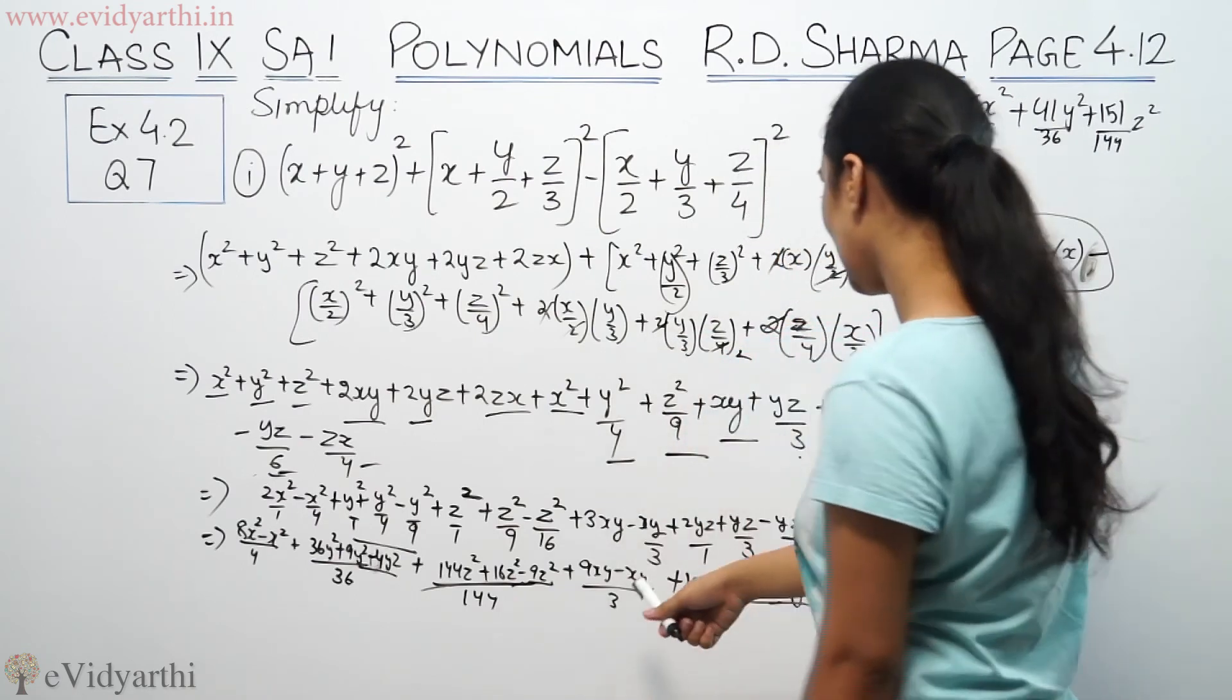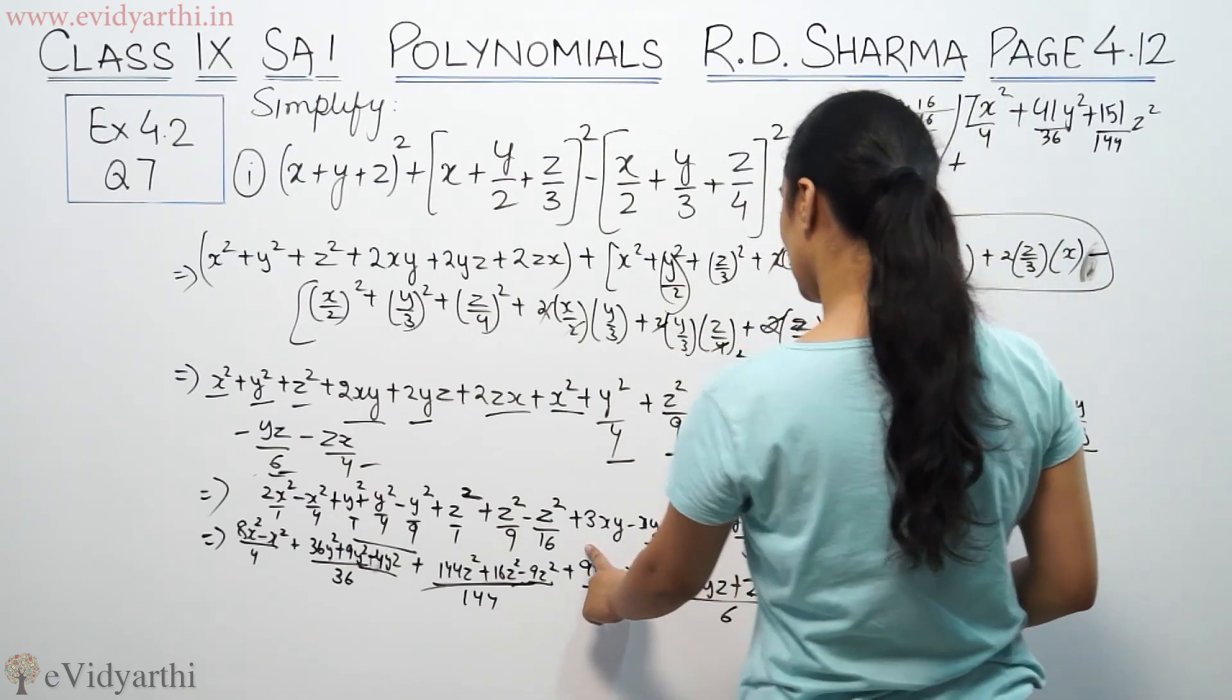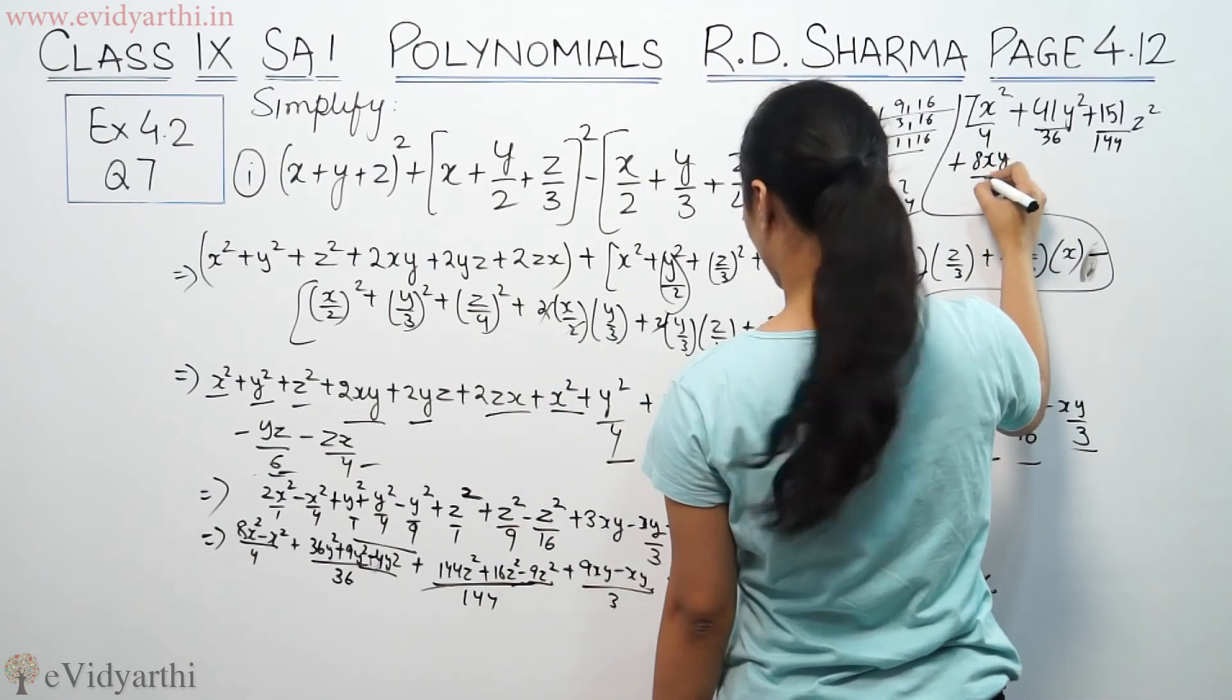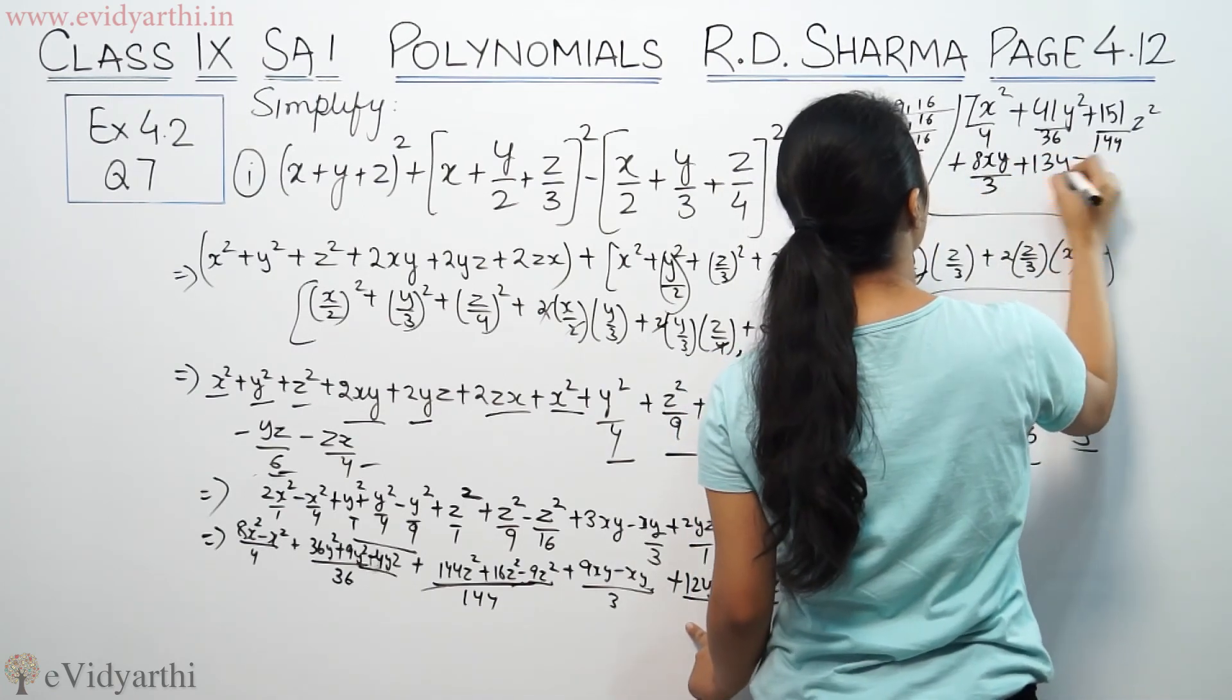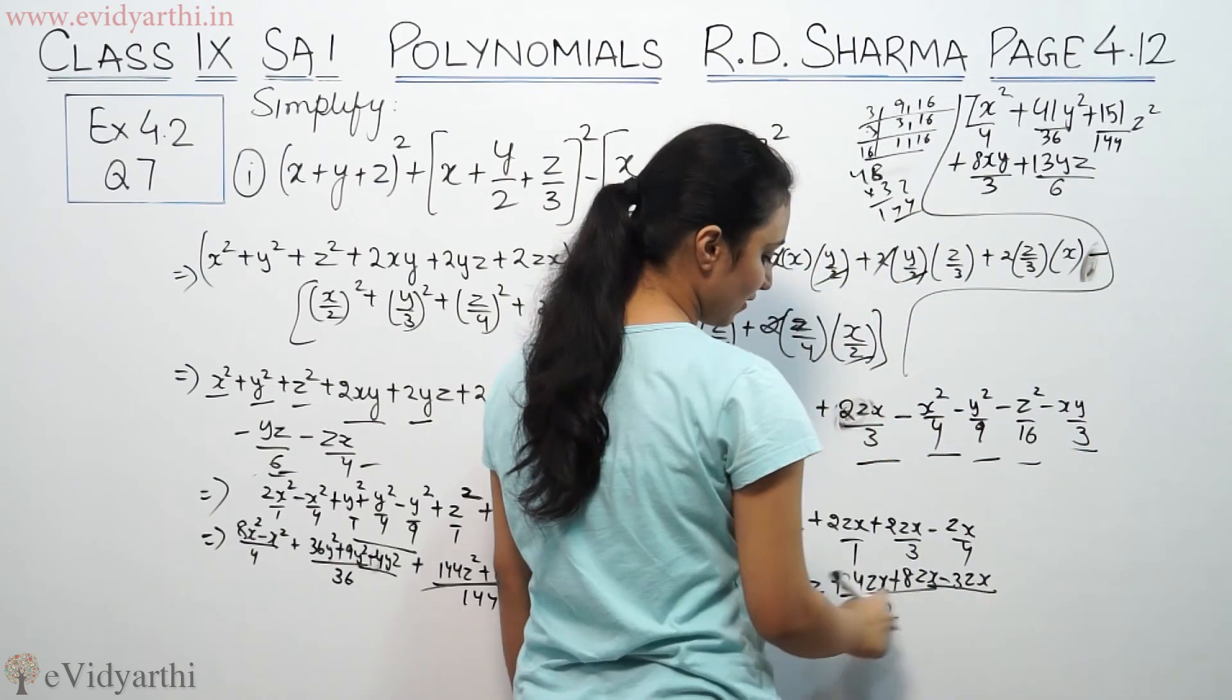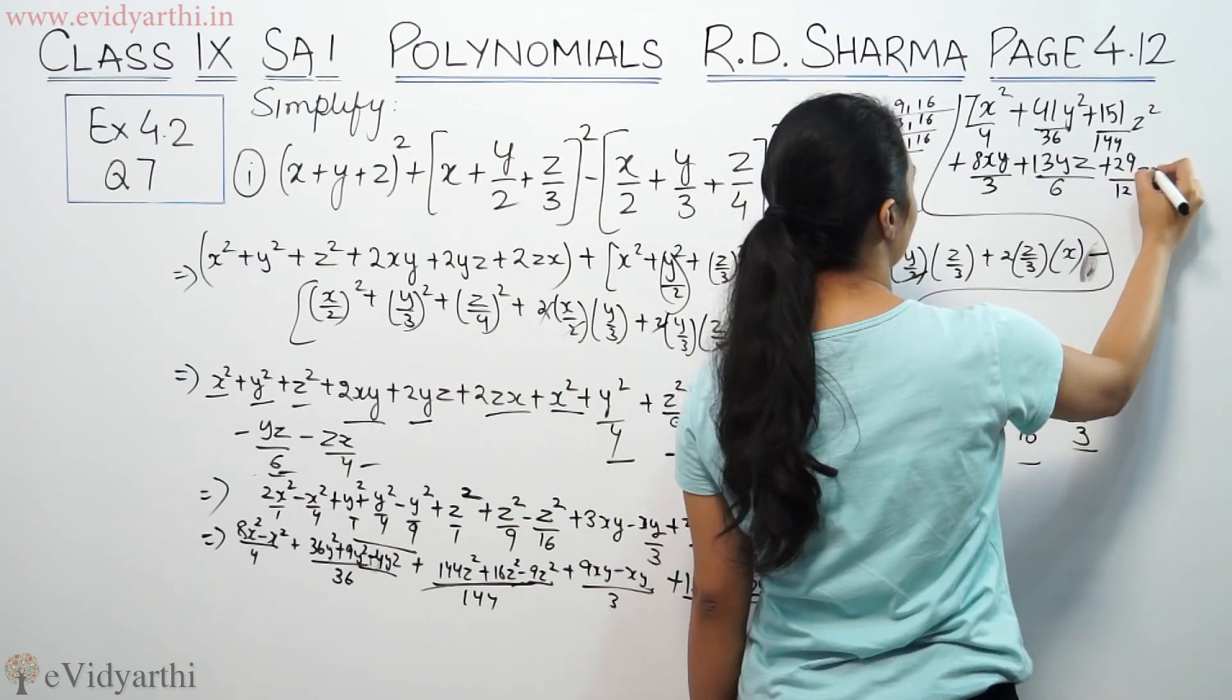For yz: 12yz+4yz-2yz=14yz, wait no, 11yz/6. For zx: 24zx+8zx-3zx=29zx/12.